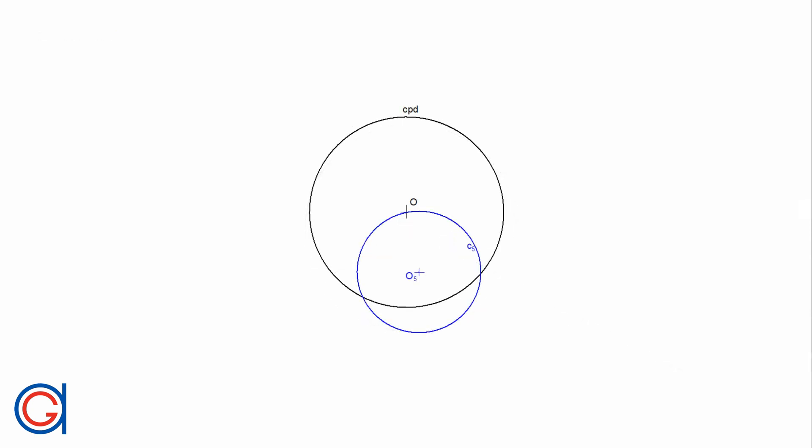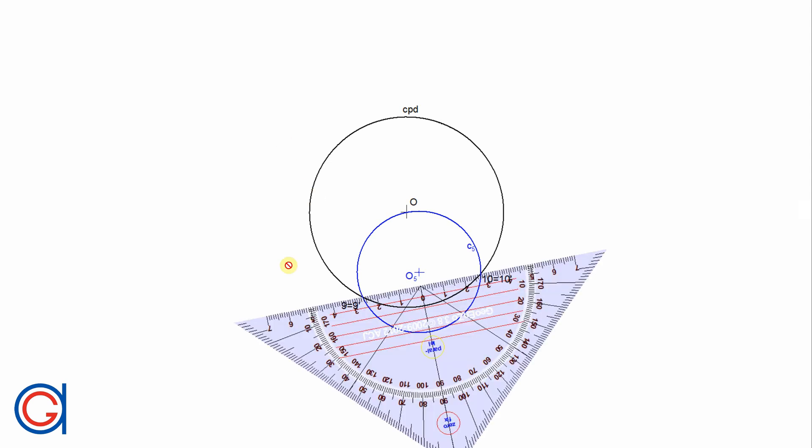C5 intersects with the reference circle and its circumference does pass through the origin O of the reference circle. The inverse C5 prime of this circle C5 is a straight line which passes through the intersection points 9 and 10, highlighted here in red dots. So we only have to join these points in a thicker red line as shown.